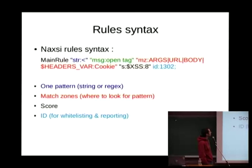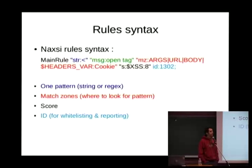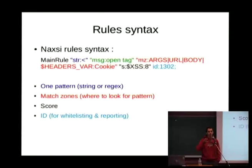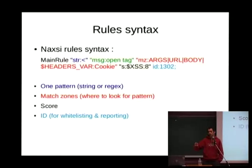Here is typically the syntax of a rule. This syntax is valid for both whitelist and core rules. Basically it is a pattern that can be a string or a regular expression — though the core rule set nearly only uses basic strings for performance. You then have what we call zones, which define where to look in the incoming request for these patterns, and a score. NAXI is configured at the location level in Nginx, so even for one website you can have different rule sets applying in different parts of the site, and each rule has a message explaining the detected threat. You can set check rules that block the request if the score exceeds, for example, eight for XSS, depending on the tightness of your configuration.